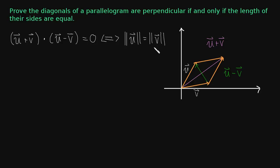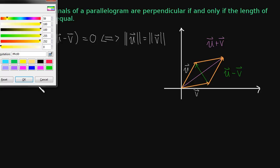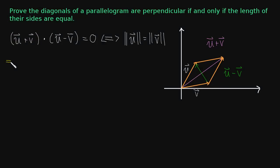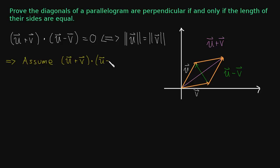Now we have a proof and we need to go in both directions. Let's go forward first. Assume that the dot product is zero — assume that the diagonals are perpendicular or orthogonal. We're going to assume this, and now we need to prove that the lengths are equal. Let's just see what happens through this equation if we expand it out.